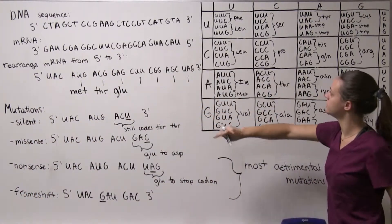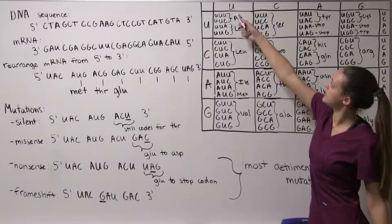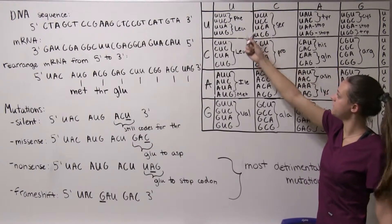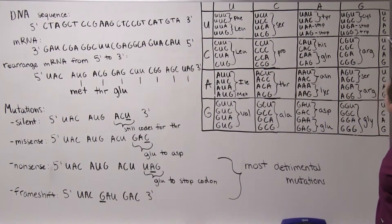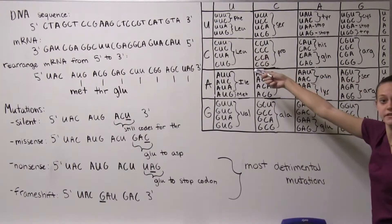CUU so we start here C then we go here for U our second letter and then here for our third letter. CUU codes for leucine.